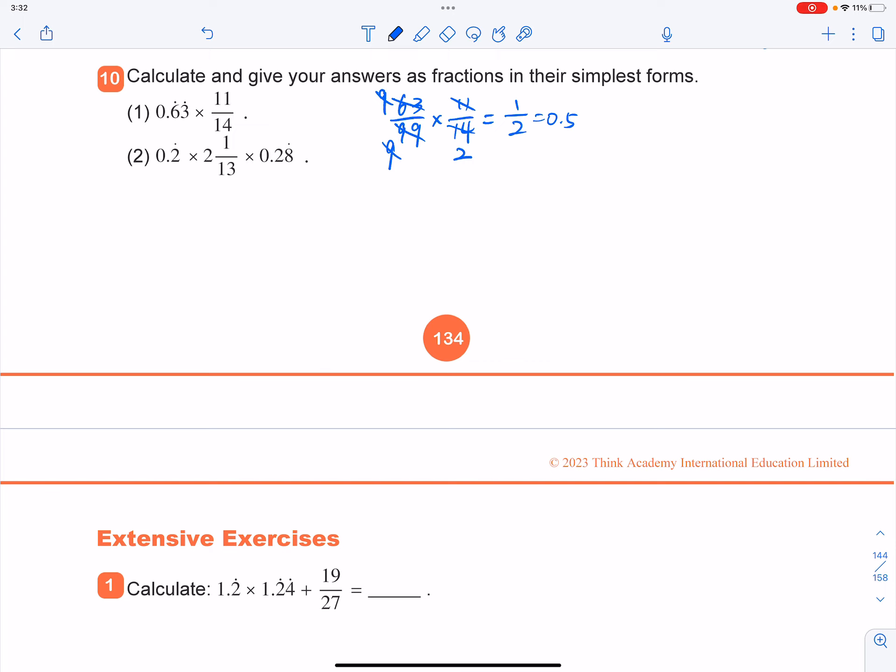0.2 with 2 recurring, that will be 2 over 9, and it times by 26. 2 times by 13, 26 plus 1, you got 27 over 13.